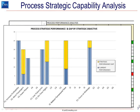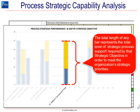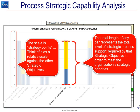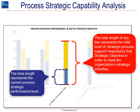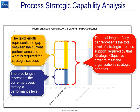So the analysis looks a bit like this. If we take a look at any one bar, the total height of the bar represents the level of process support that that strategic objective requires in order to be successful. The scale is in strategy points — what we've done is multiplied the importance of the strategic objective by the maximum score you could receive on every single objective that touches that particular strategic objective. Within the bar, there are two components: the blue element describes the current capability of the process, and the gold part represents the gap between how well the process is currently performing and what's required for strategic success.